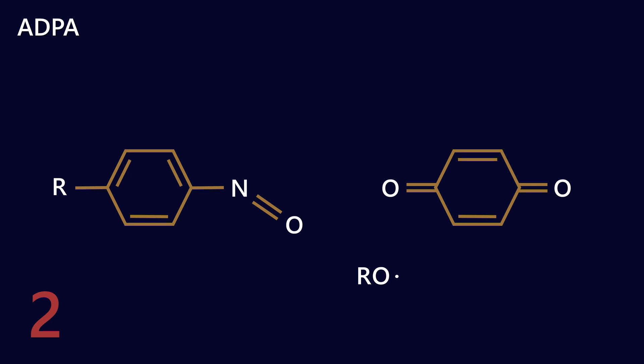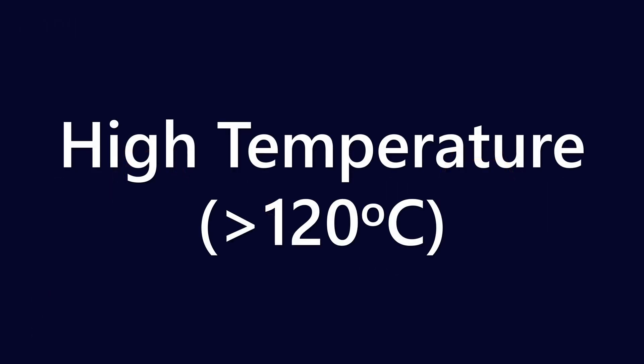In actual practice, some experimentation has been done around this, and what they believe is that each molecule of diphenylamine is able to neutralize four different radicals — so we're probably missing a couple of steps and the mechanics may not be completely understood, but that is the net effect. Now, something to know: that was the low-temperature situation. When we get to high temperatures — above about 120 degrees Celsius — the mechanism for ADPA neutralizing radicals is actually quite a bit different.